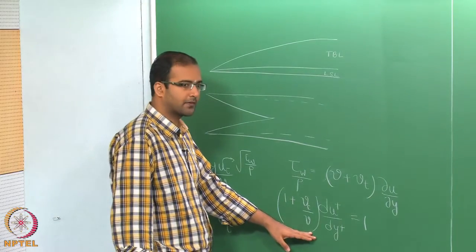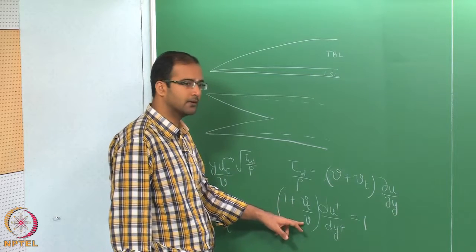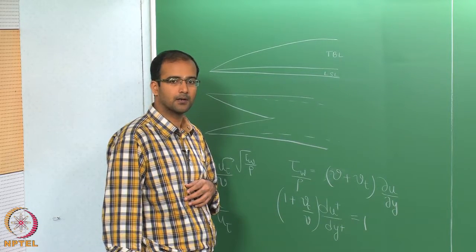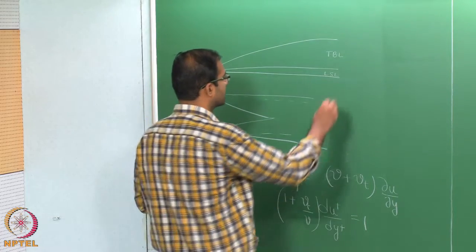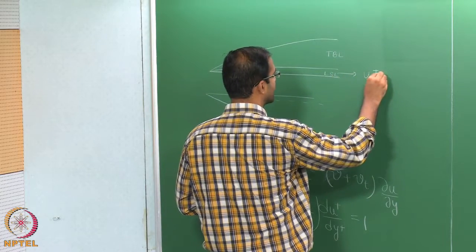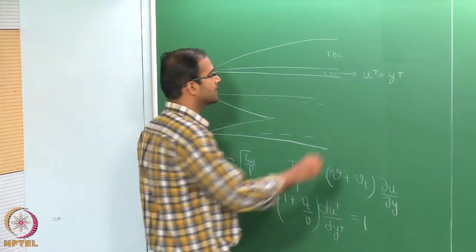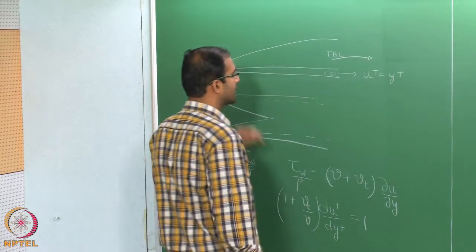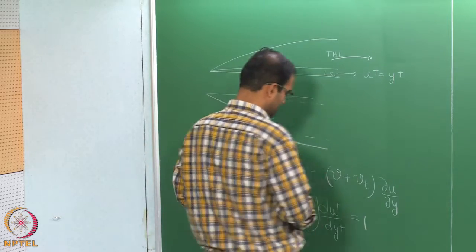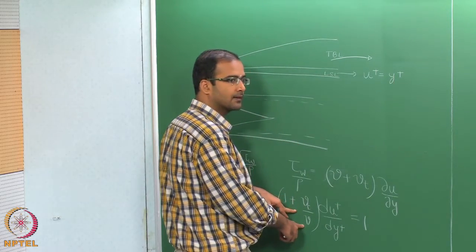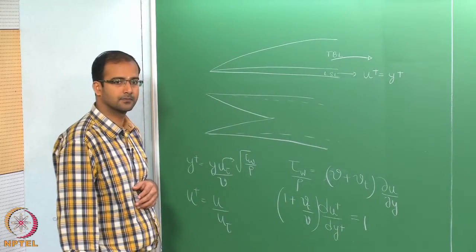From this, we differentiated into a laminar sublayer. For the laminar sublayer case, ν_t/ν is very small compared to 1, and therefore we get a linear variation in the velocity profile. So here we obtained the profile: u+ equals y+. Whereas in the turbulent boundary layer, if you neglect the laminar sublayer and assume only a turbulent boundary layer throughout, we get ν_t/ν much greater than 1, and we substituted for ν_t from Prandtl's mixing length model.